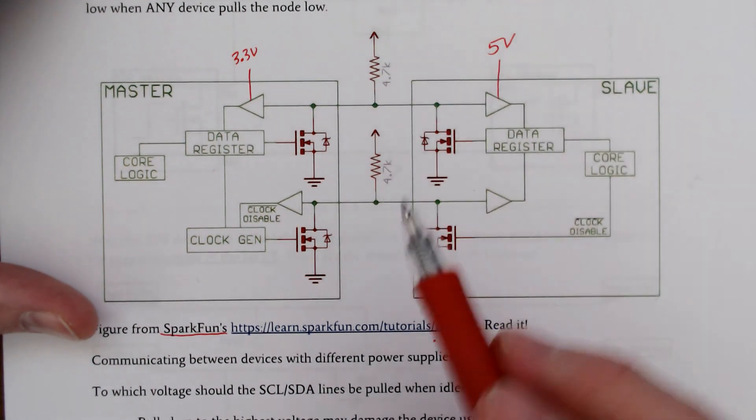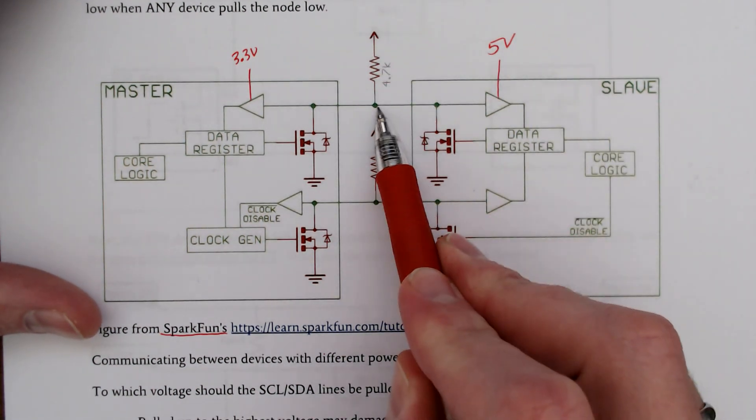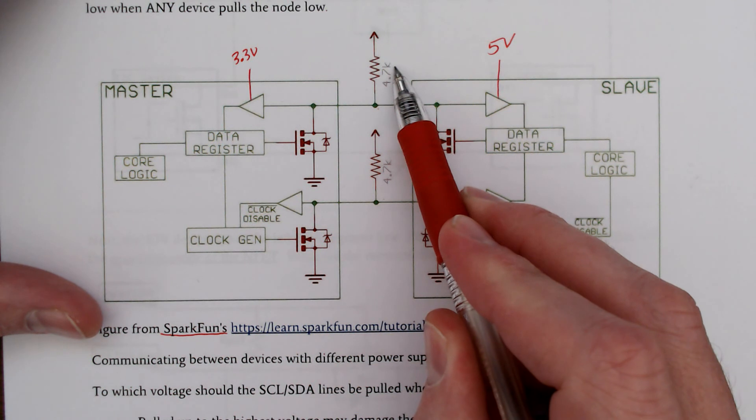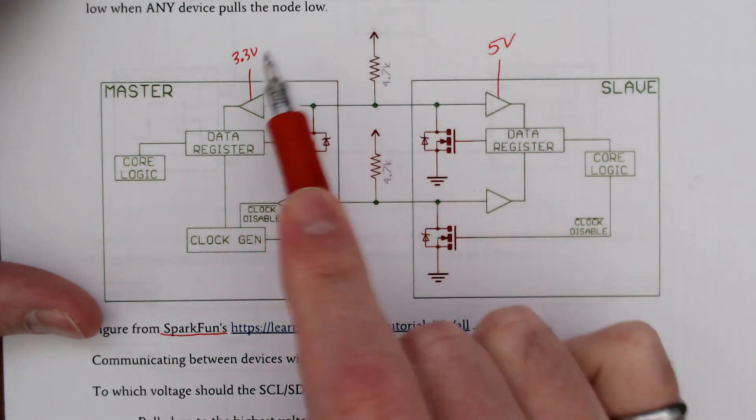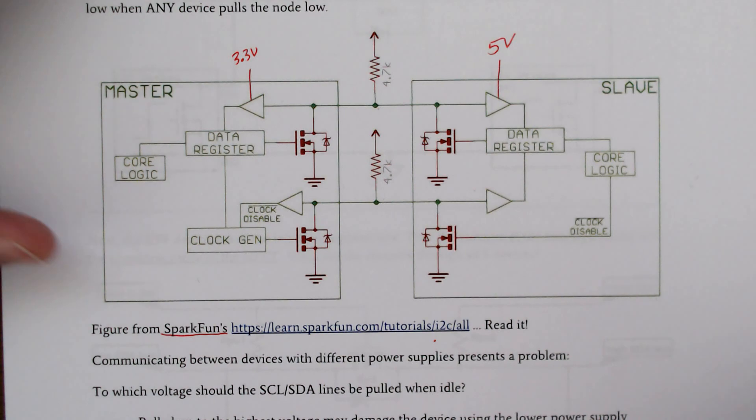We do have some problems. This line here needs to be pulled up through this pull-up resistor. Does it get pulled up to 3 volts? Does it get pulled up to 5 volts? Which one is it?